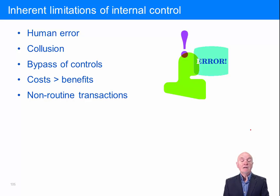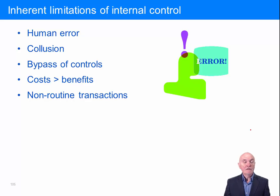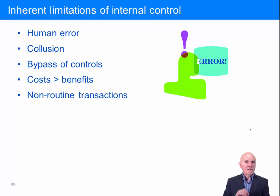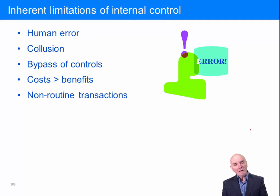Costs and benefits: for many trivial transactions you're not going to institute any controls. Strictly speaking, you should lock away pens, paper, and inkjet ink and only issue them when employees come with a properly authorized requisition note — but the costs of going through all of that and the delay involved is going to be much greater than the benefits. And finally, non-routine transactions: transactions which are sufficiently rare that you have not actually set up a system.